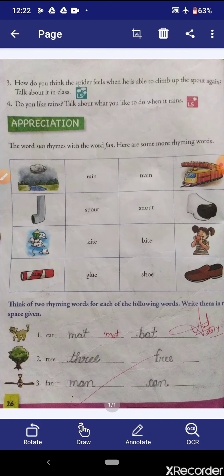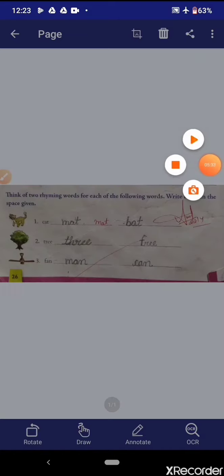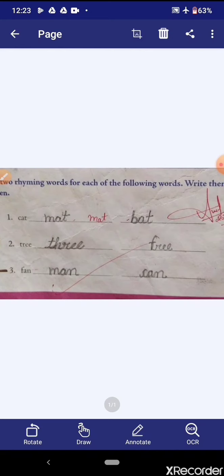Think of two rhyming words for each of the following words. Write them in the given space. The answer is like this: cat. The first rhyming word is mat, and the second is bat. In the first blank, you write mat, and in the second blank, you write bat.